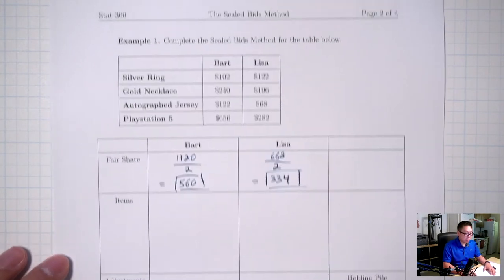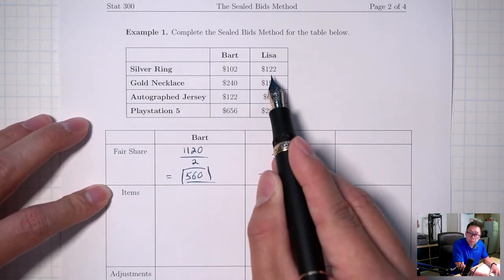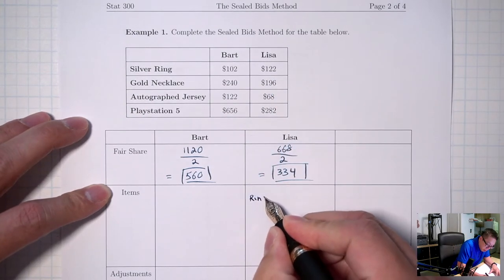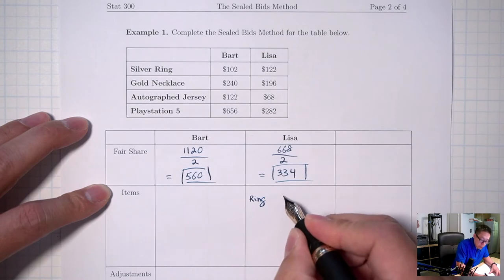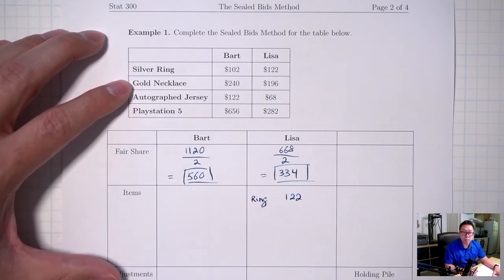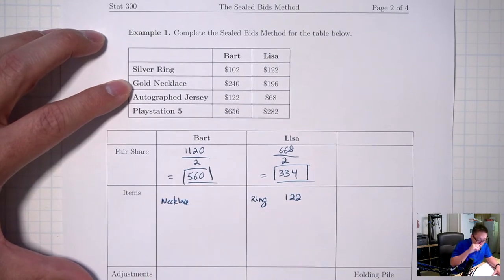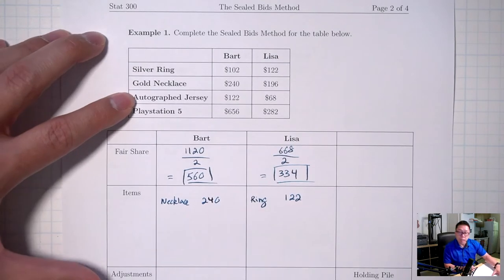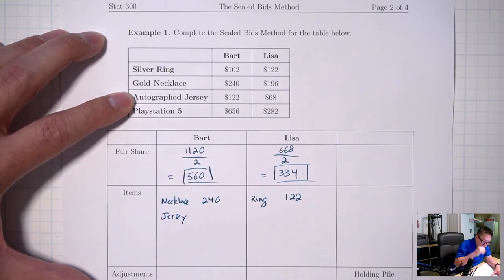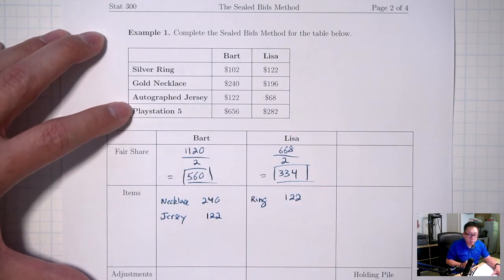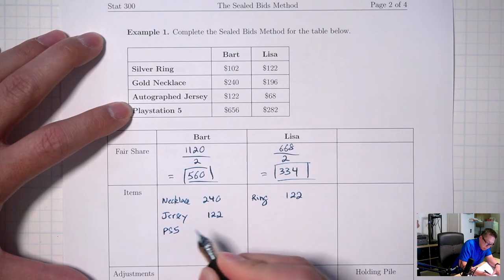Next step is to actually give out the items. For each item, whoever bids more gets it. The ring: 102 vs. 122 — Lisa gets the ring, worth $122 to her. The necklace: 240 vs. 196 — Bart gets it, worth $240 to him. The jersey: 122 vs. 68 — Bart gets it, worth $122 to him. The PlayStation 5: 656 vs. 282 — Bart gets it, worth $656 to him.